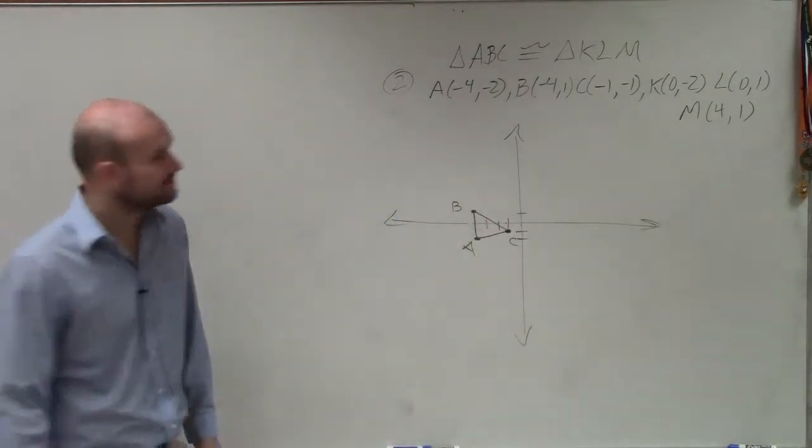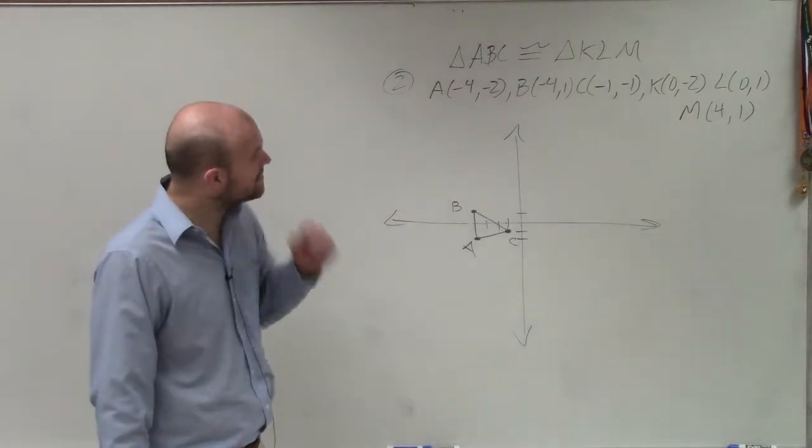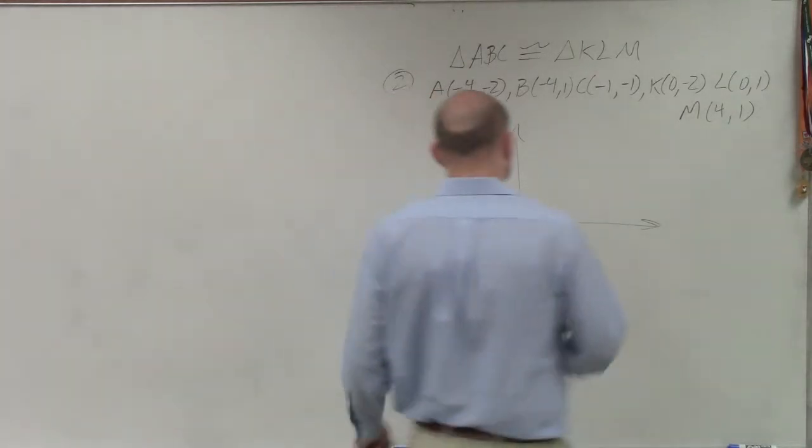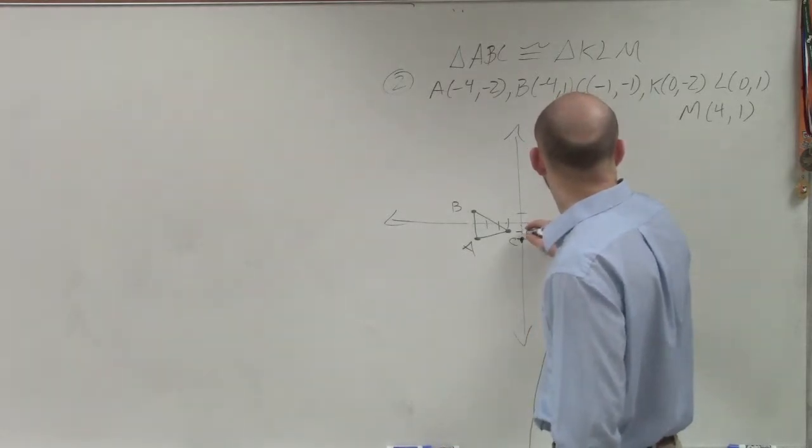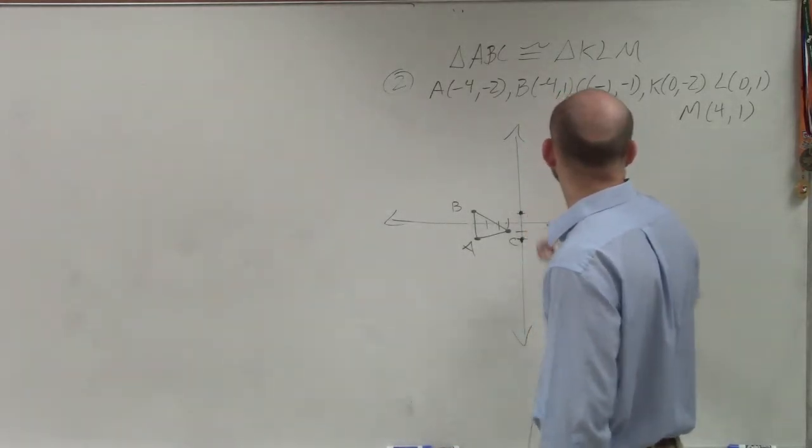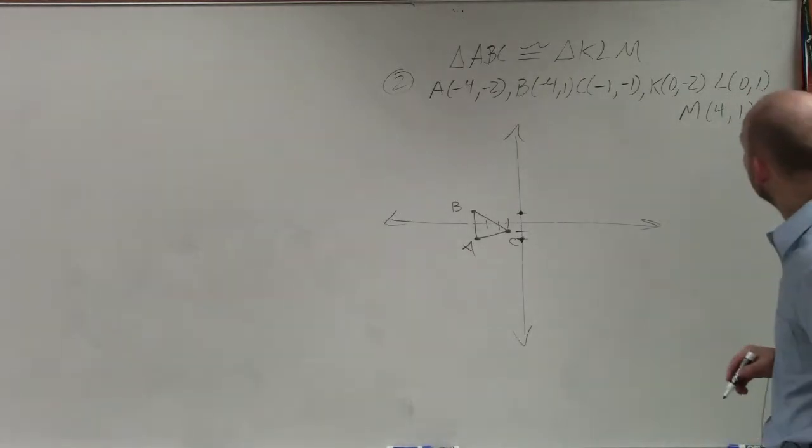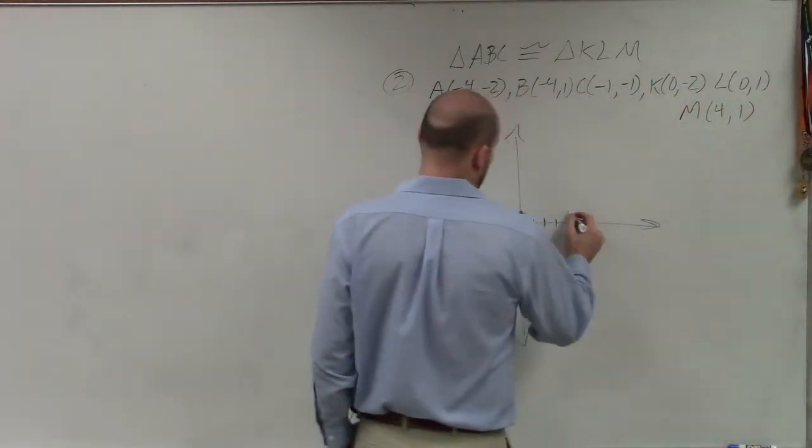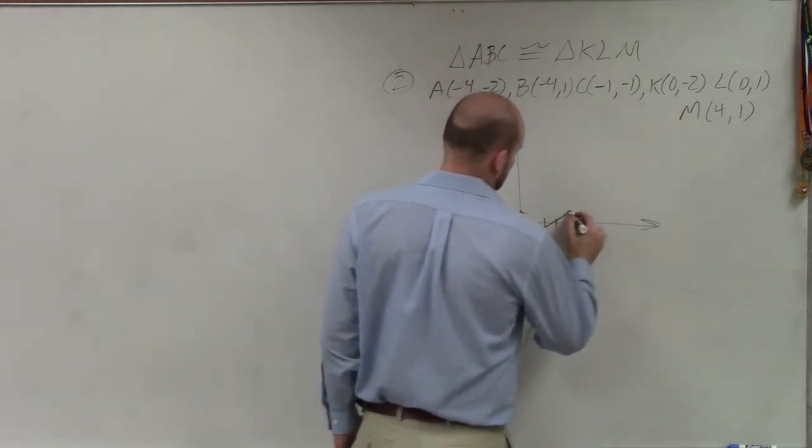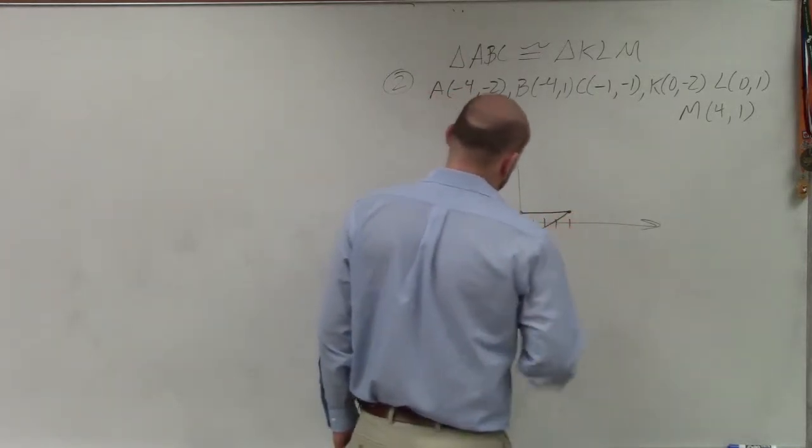So that's my one triangle. And then the next thing that I want to be able to do is take a look at K, which is at 0, negative 2, L at 0, 1, and then M at 4, comma 1.